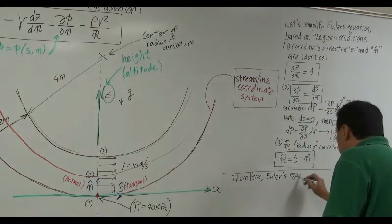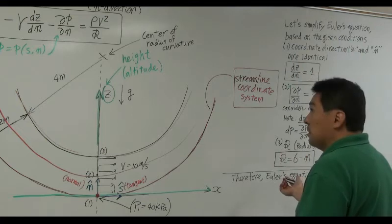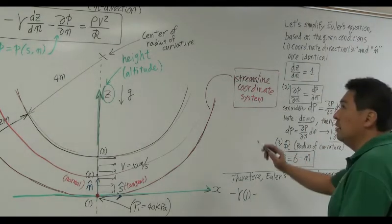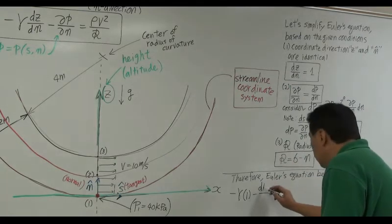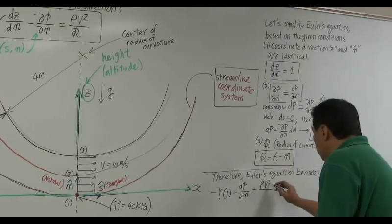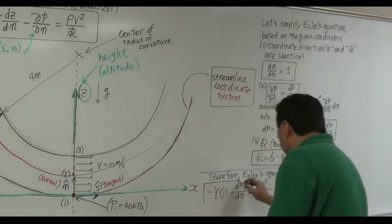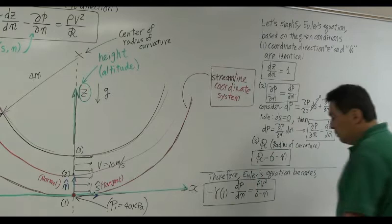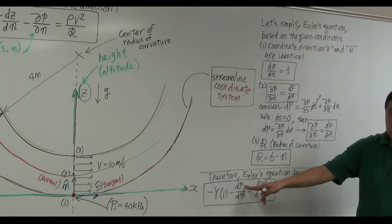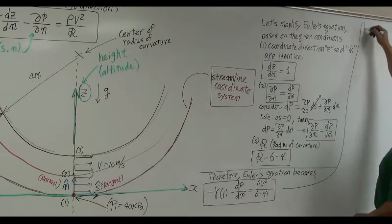The simplified equation becomes: dp/dn = -γ·(1) - ρV²/(6 - n). The partial derivative becomes an ordinary derivative dp/dn, and the radius of curvature is substituted as (6 - n). This is now an ordinary differential equation — by integrating this equation, you can determine the pressure difference between any locations in the direction of n.